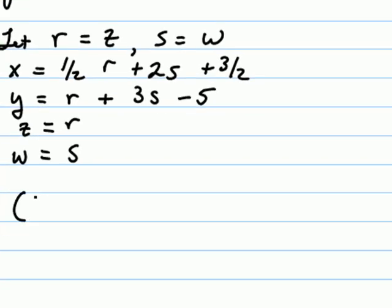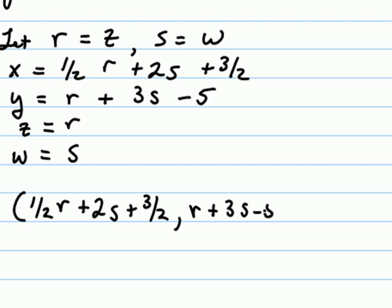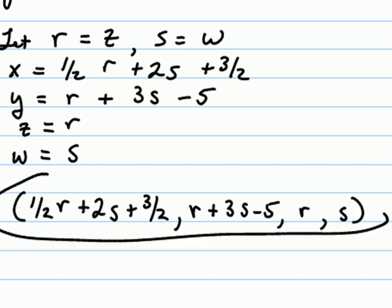And so our solution then can be written as this ordered four-tuple: 1 half r plus 2 s plus 3 halves. That's the x coordinate. r plus 3 s minus 5. That's the y coordinate. The z coordinate is r. And the w coordinate is s. This is a case of infinitely many solutions and this is what the solution will look like.